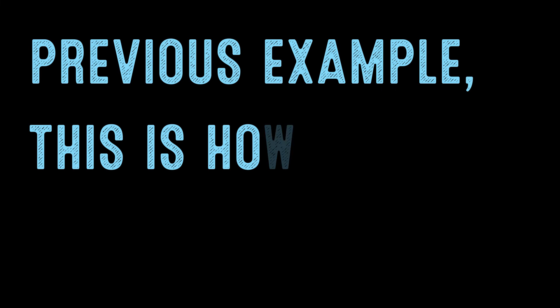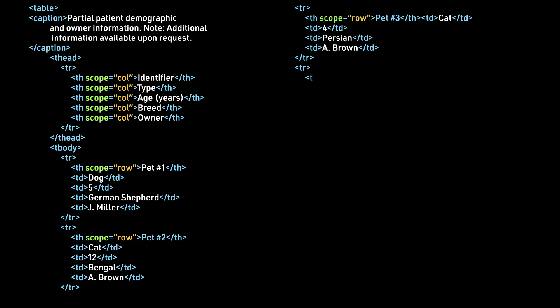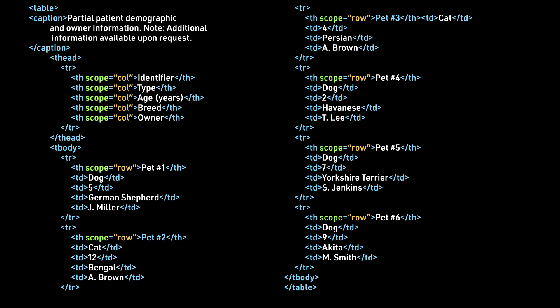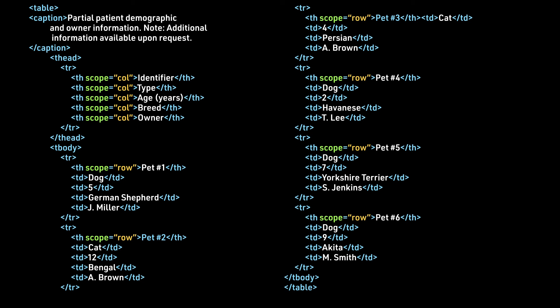Going back to our previous example, this is how we can improve its accessibility further. We have added our footer note to the caption, so the user using an assistive device understands that more information can be requested without having to go through the entire table. We no longer use the colspan attribute, and the table does not need a footer. Here is how it would look.